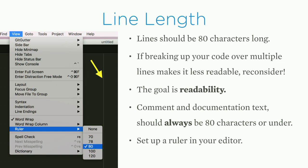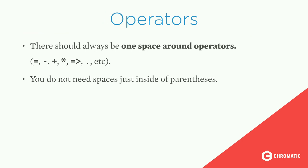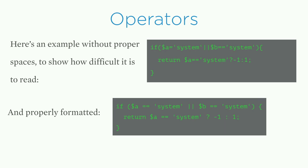Comment and documentation text should always be 80 characters and under, and you can easily set up a ruler in your editor. Regarding operators, there should always be one space around operators, but you do not need spaces just inside parentheses. To show why we put spaces around operators — using the ternary operator without spaces is much harder to read. With spaces, it's suddenly much clearer: if A equals system or B equals system, the ternary returns negative one or one.